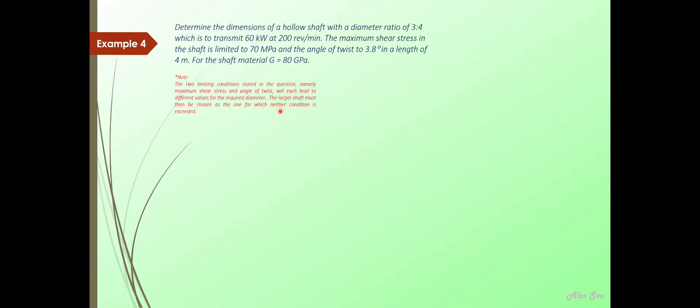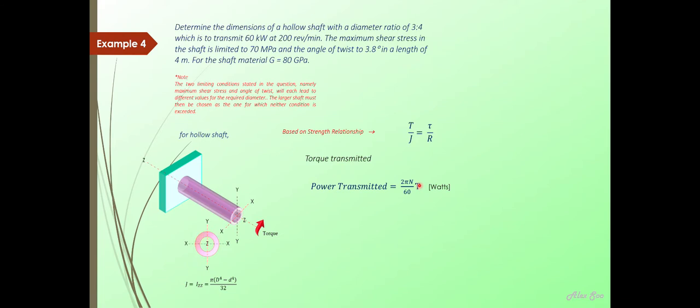So the first part here, that is the diagram for a hollow shaft, the polar moment of inertia about the z-axis. Based on strength relationship, this is your strength relationship, torque transmitted. Based on the power formula, you can find out the torque and the speed is 200 rpm. The power given is 60 times 10 to the power of 3 watts. So the torque would be 2860 Newton meters.